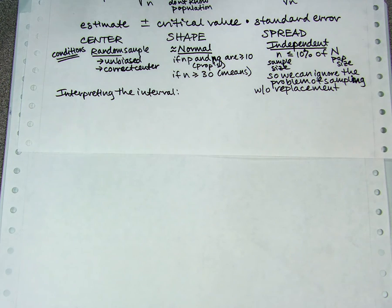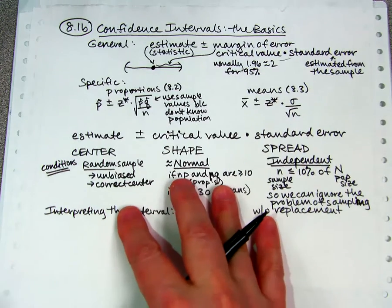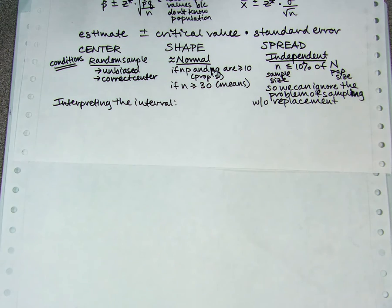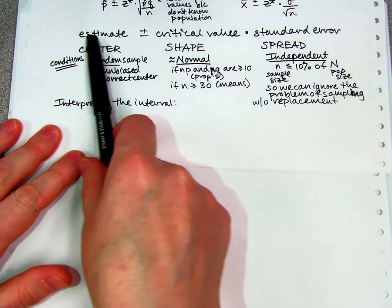Hello, Stats class. This is the continuation of lesson 8.1b. I remembered after I stopped the video that I forgot a piece, so I'm going to do it now. One of the things they're going to ask you in your homework and on the quiz is to interpret the confidence interval you just calculated.